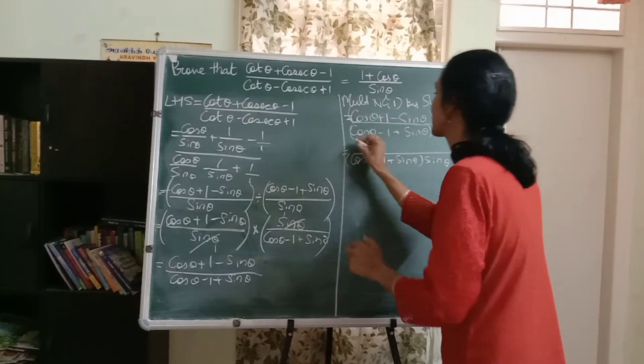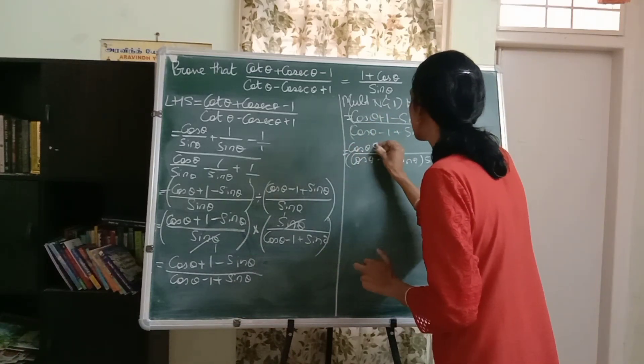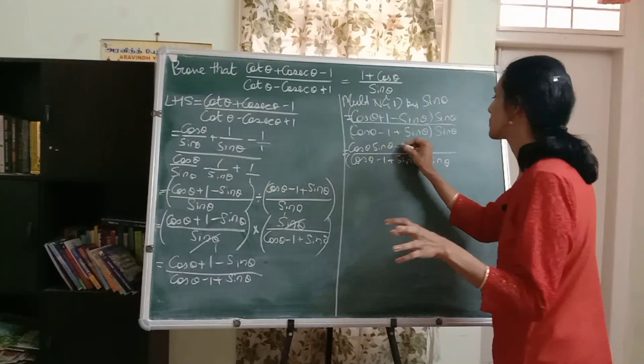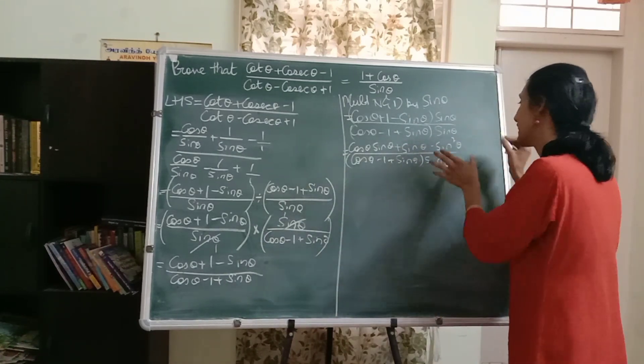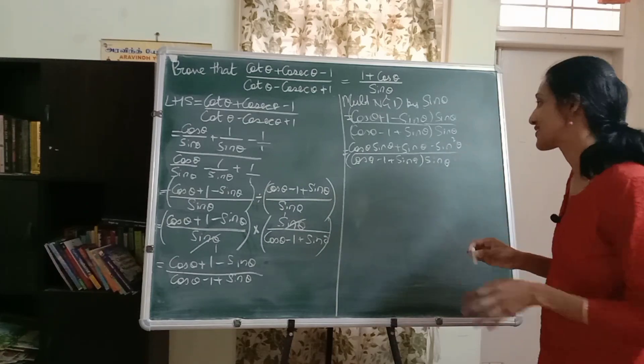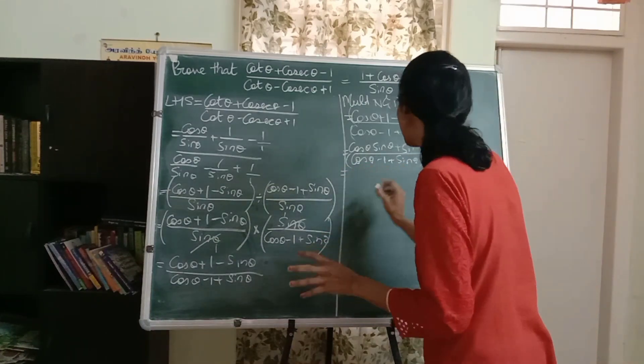Now numerator, I'll bring the sine theta inside. So I get cos theta sine theta, plus sine theta minus sine square theta. Finally, we've got the sine square theta, so let me immediately apply the identity.